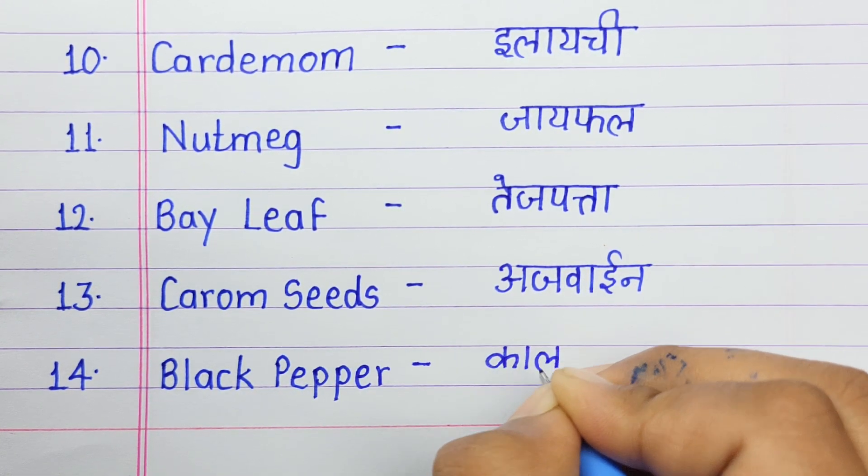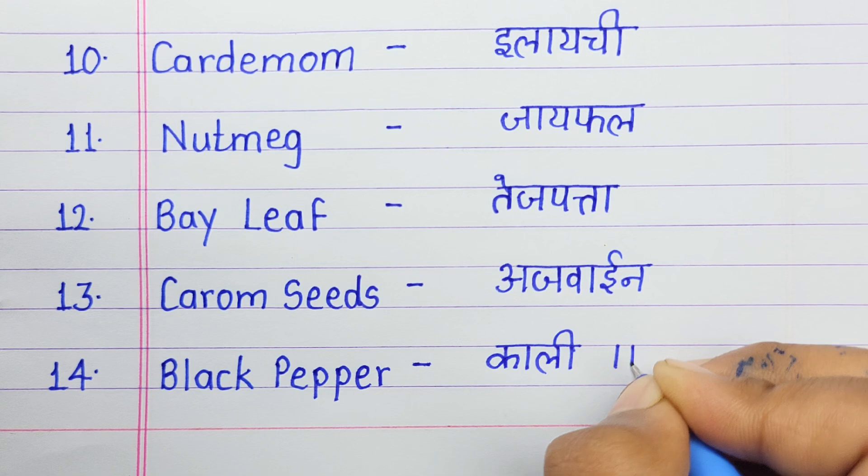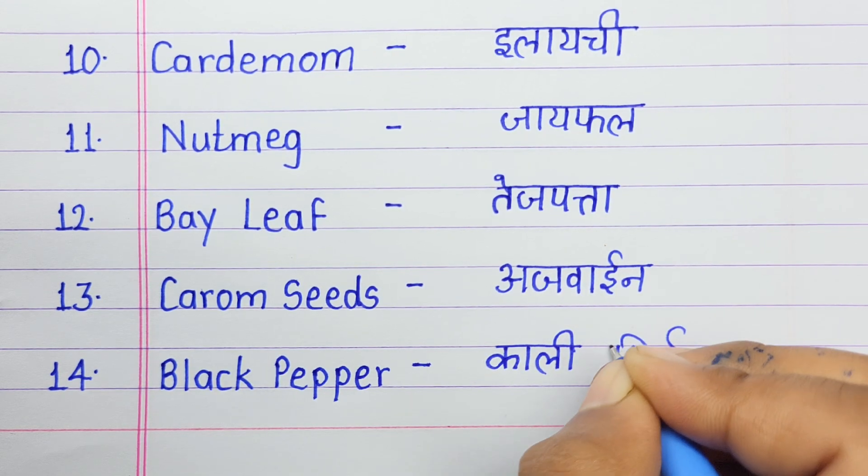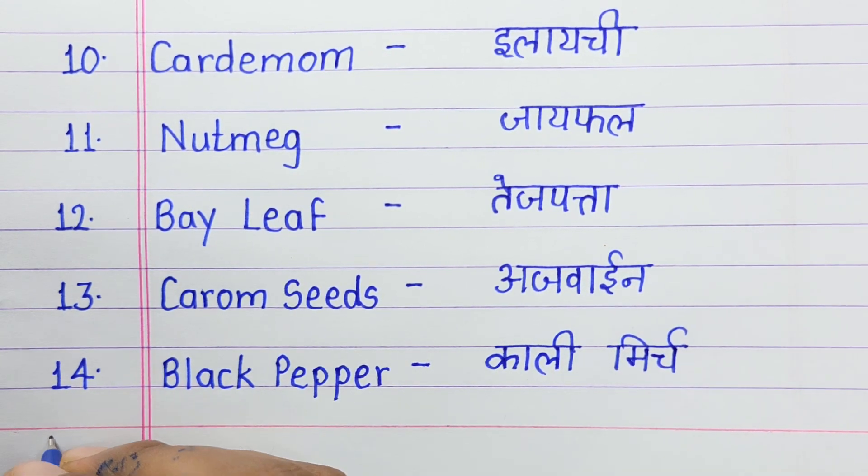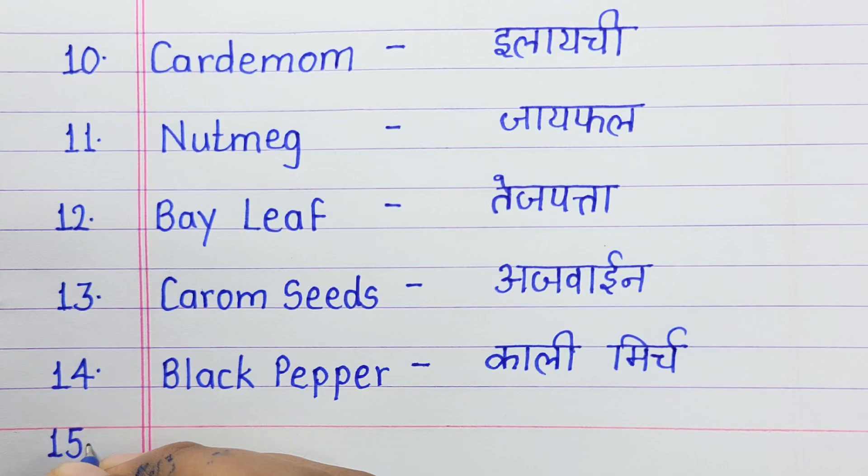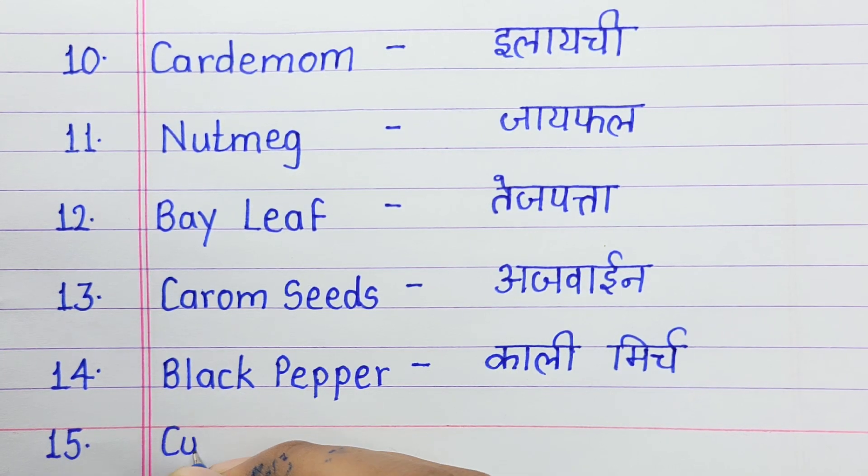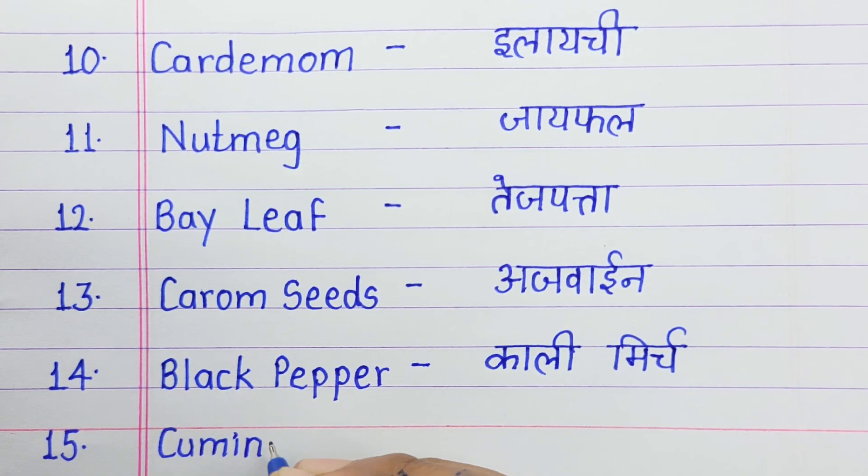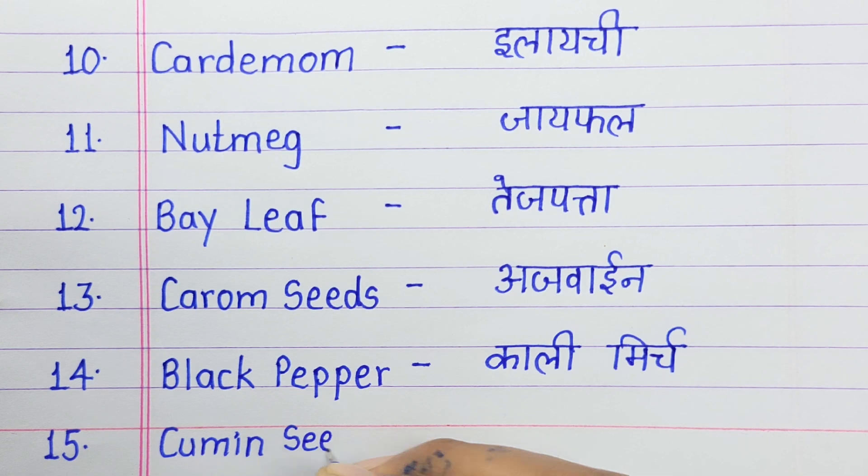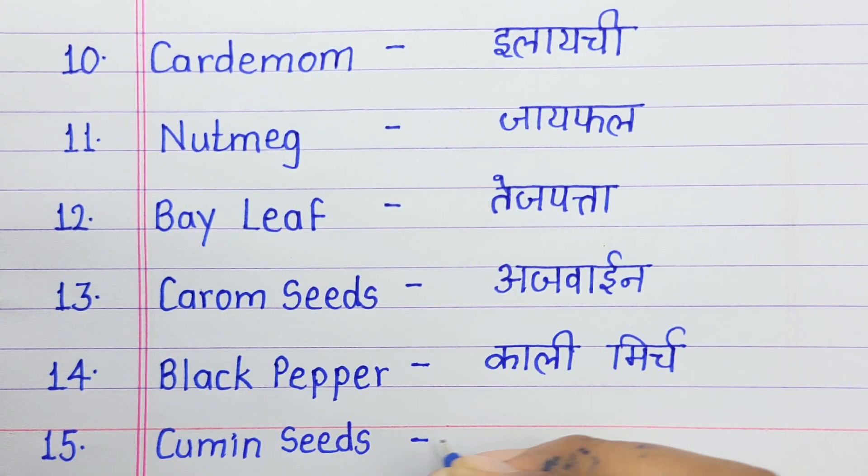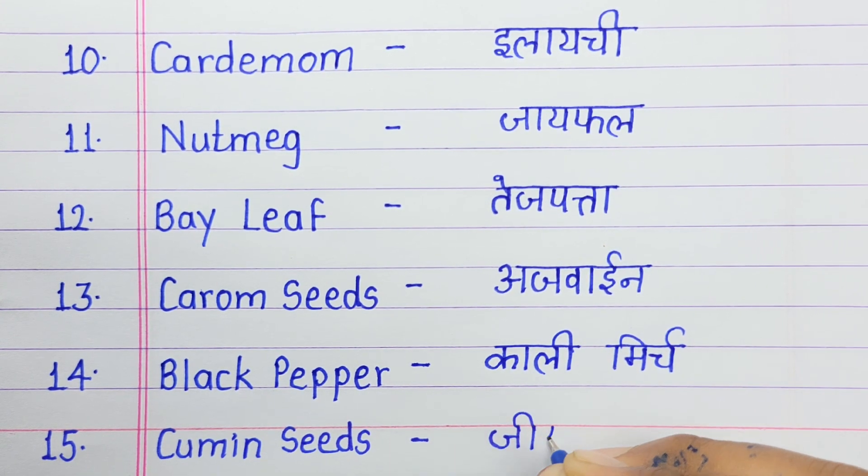Number fourteen: Black pepper means kali mirch. Number fifteen: Cumin seeds means jira.